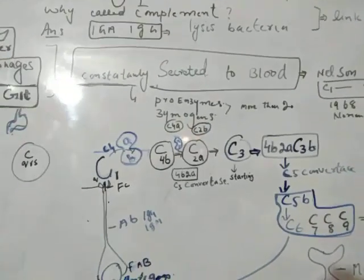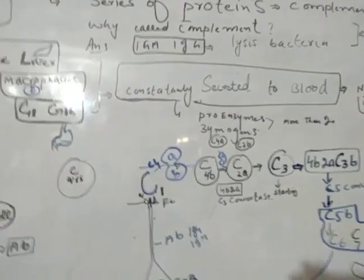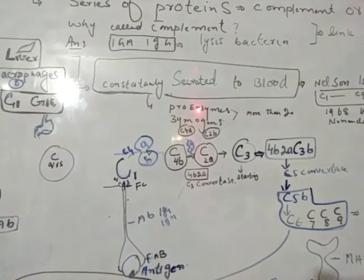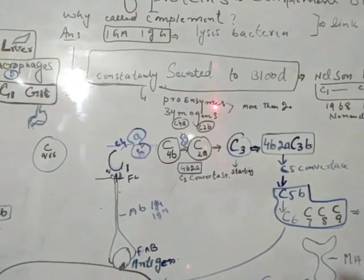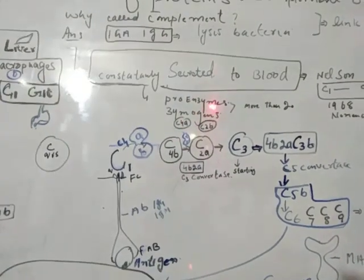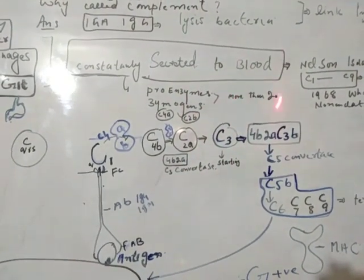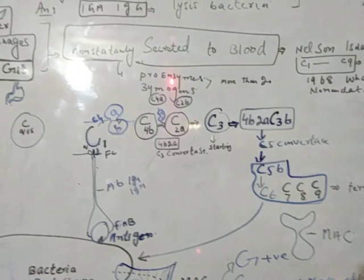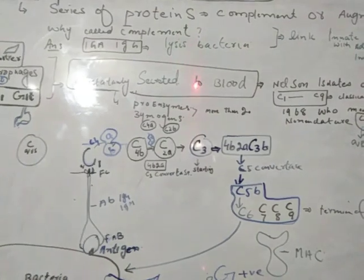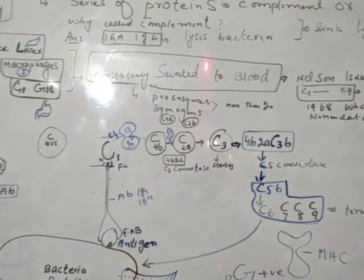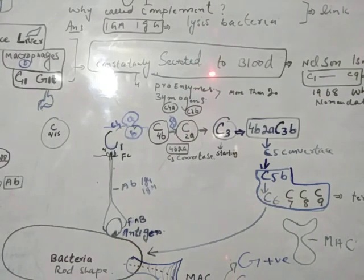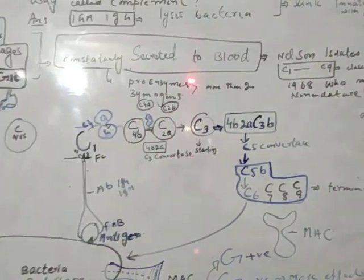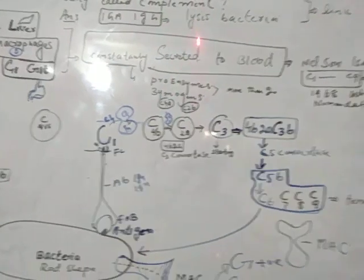These proteins are present in a normal person's blood, and they are actually present in the form of pro-enzymes called zymogens. These are approximately 35 different types of proteins, constantly produced and present in an inactive zymogen form. They are activated when an antigen enters the body.